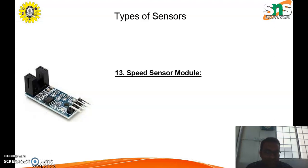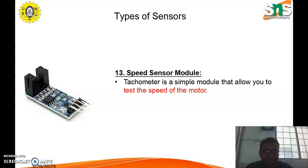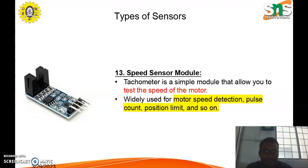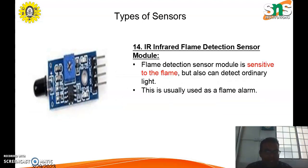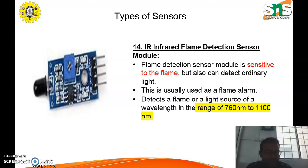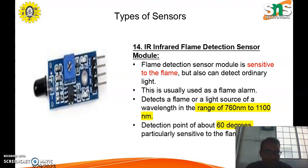The next type is the speed sensor module. A tachometer is a simple module that allows you to test the speed of a motor, widely used for motor speed detection, pulse count, and position limit. Next is the infrared flame detection sensor module. This sensor is sensitive to flame and also detects ordinary light, and is usually used as a flame alarm. It detects a flame or light source with wavelengths in the range of 760 nm to 1100 nm, with a detection angle of about 60 degrees.